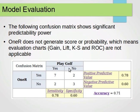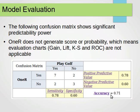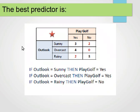We can show a confusion matrix for Outlook: actual values of yes and no versus predicted values of yes and no. We count true positives, true negatives, false positives, and false negatives, and compute the accuracy. We can do this for each attribute and choose the one with the highest accuracy — in our case, that will be Outlook.